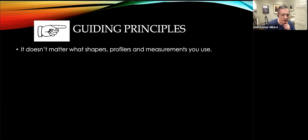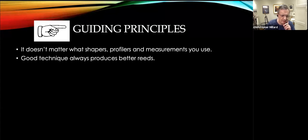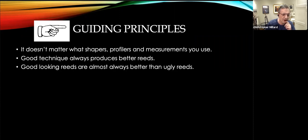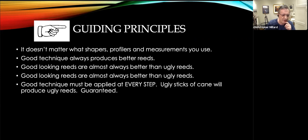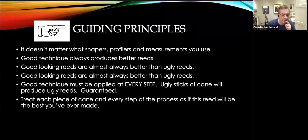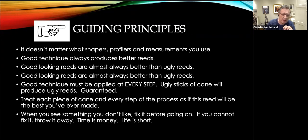I think I've spent way too many years teaching bassoon and teaching reed making, but I keep finding more rules and additional pieces of wisdom. This is really important. It doesn't matter what shapers, profiles, and measurements you use. Good technique always produces better reeds. Good looking reeds are almost always better than ugly reeds. Good technique must be applied at every step. Ugly sticks of cane will produce ugly reeds, guaranteed. Treat each piece of cane and every step of the process as if this reed will be the best you've ever made. And finally, when you see something you don't like, fix it before going on. And if you can't fix it, throw it away. Time is money and life is short.